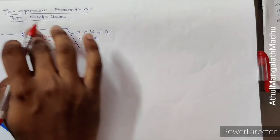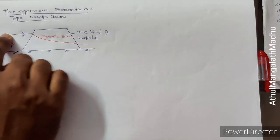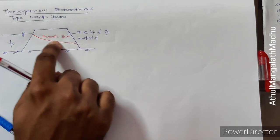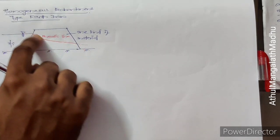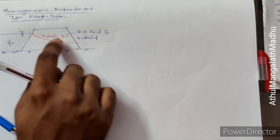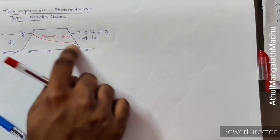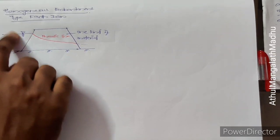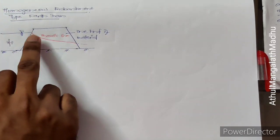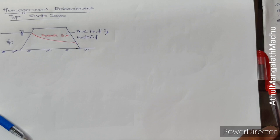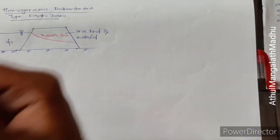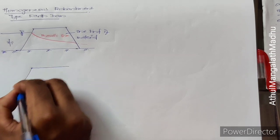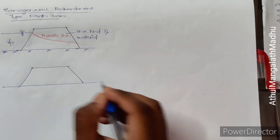Above the phreatic line there is no seepage. At the water surface, the pressure is atmospheric. Along the phreatic line, the pressure also acts as atmospheric pressure, just as it is at the surface because it is exposed to the atmosphere.